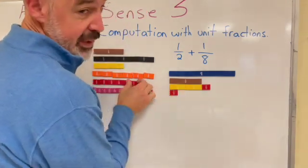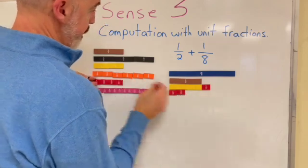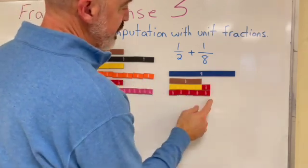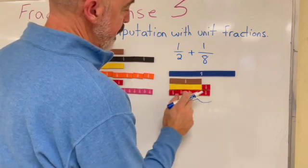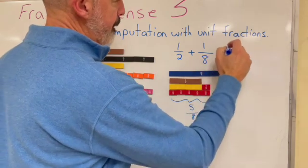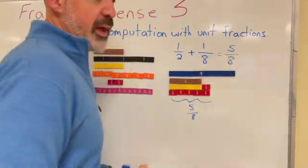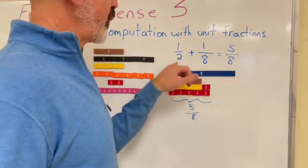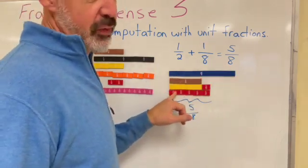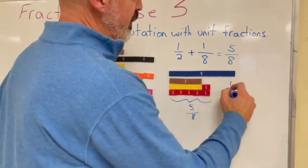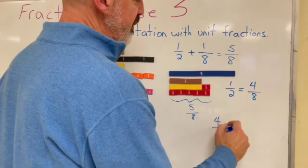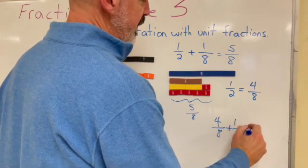But they'll eventually get down to eighths. And they'll see that the answer is five-eighths. And so, you want to ask your child, well, in order to get that answer, what did you do with one-half? And they'll say, I changed it, or I converted it to four-eighths. So, along the way, they see that one-half equals four-eighths.